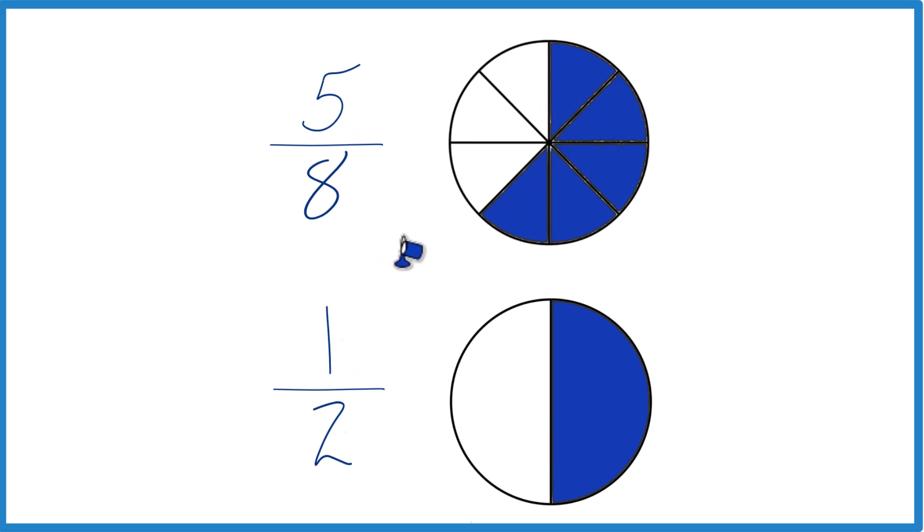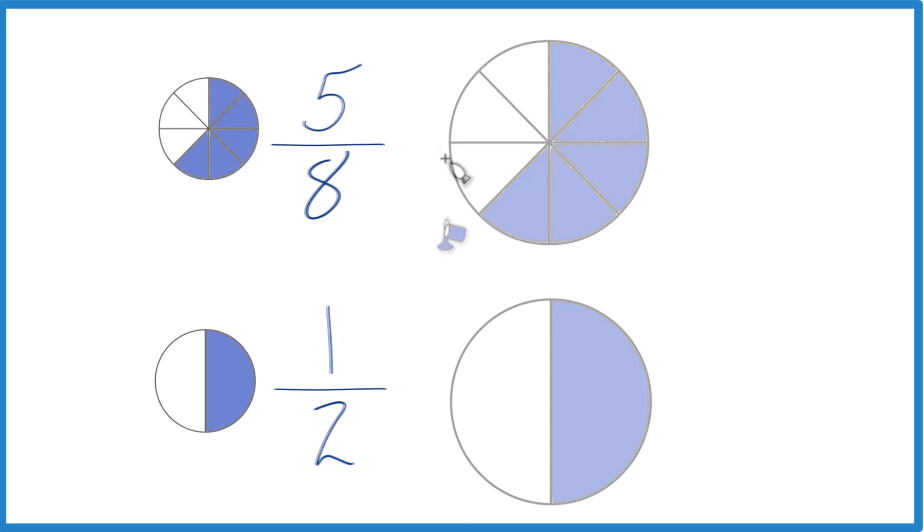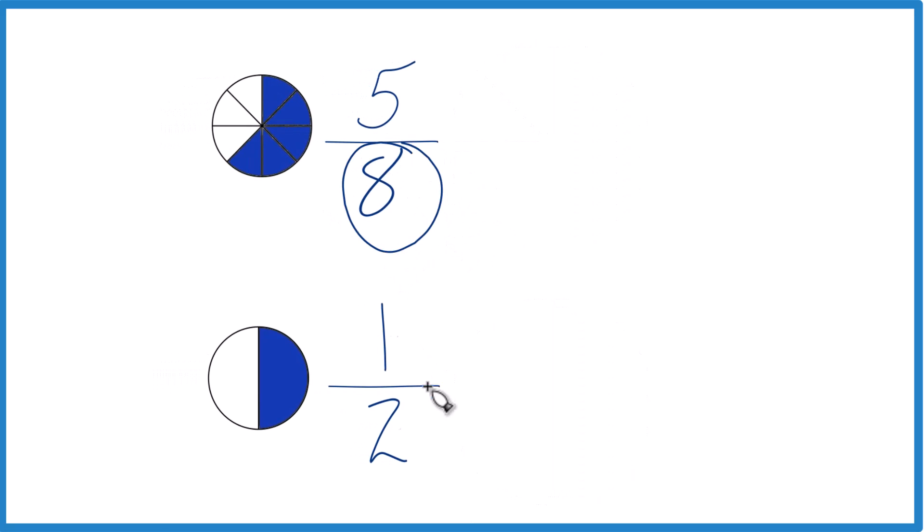There's another way you can do this as well, probably the one that teachers want you to do. So if we get the denominators to be the same number, then we can just compare the numerators to figure out which is bigger, 5 eighths or 1 half.